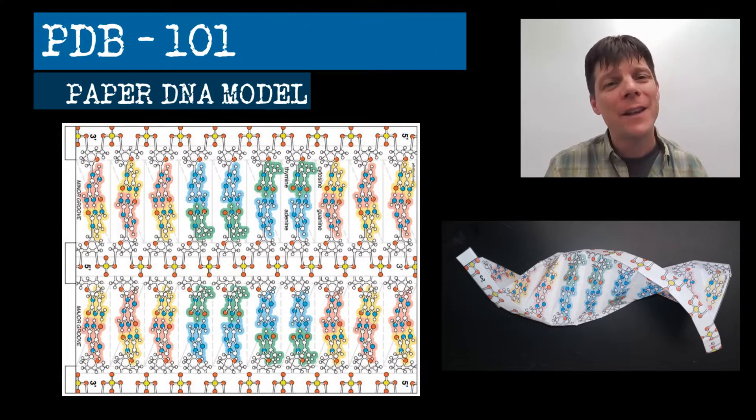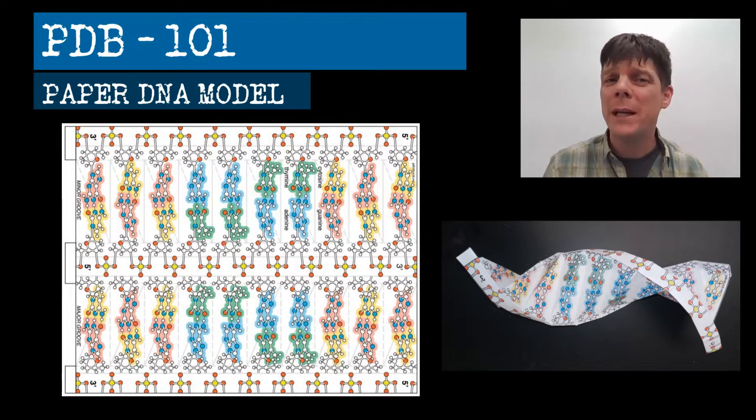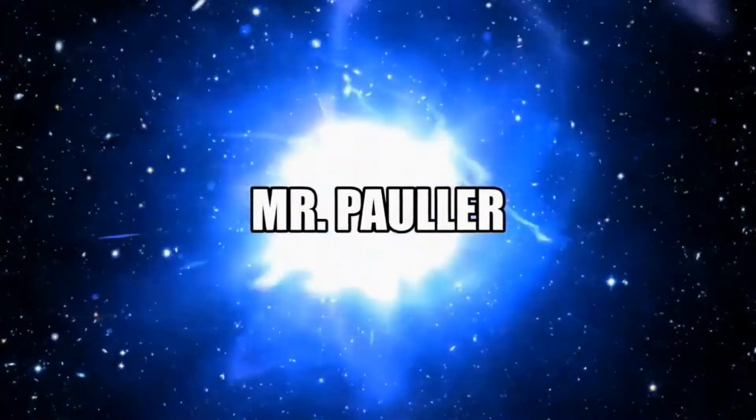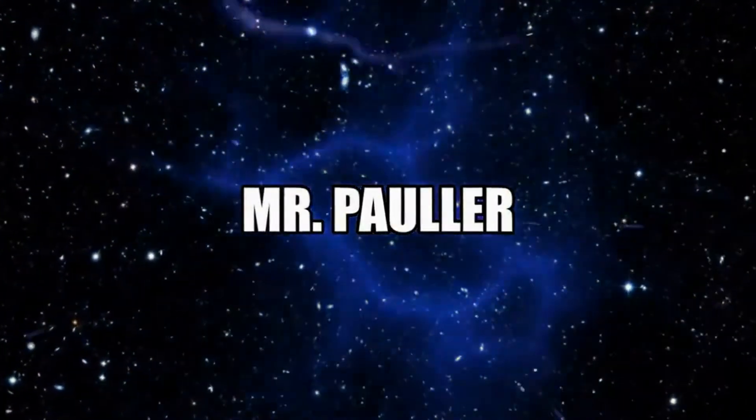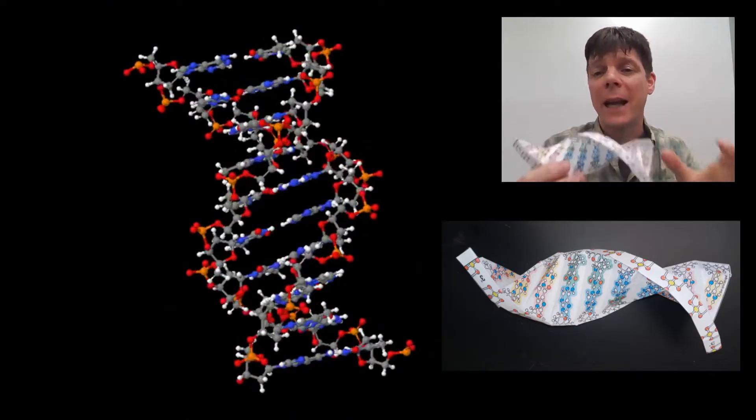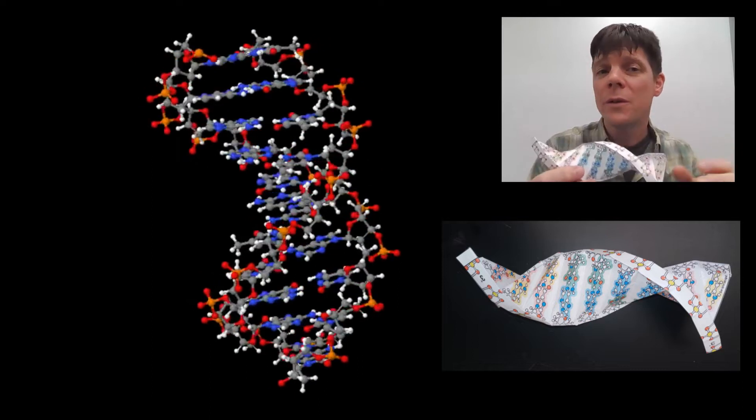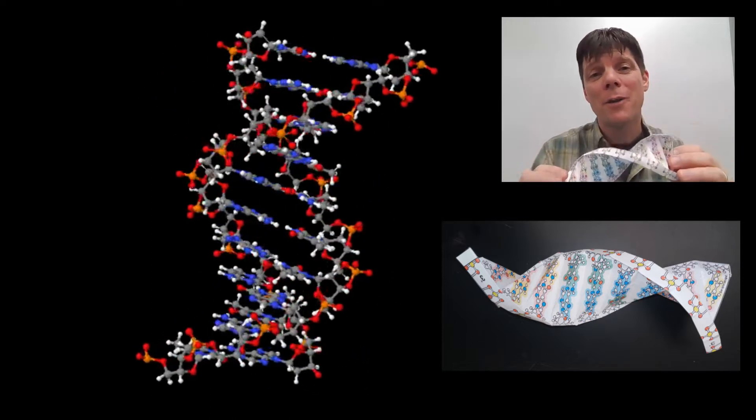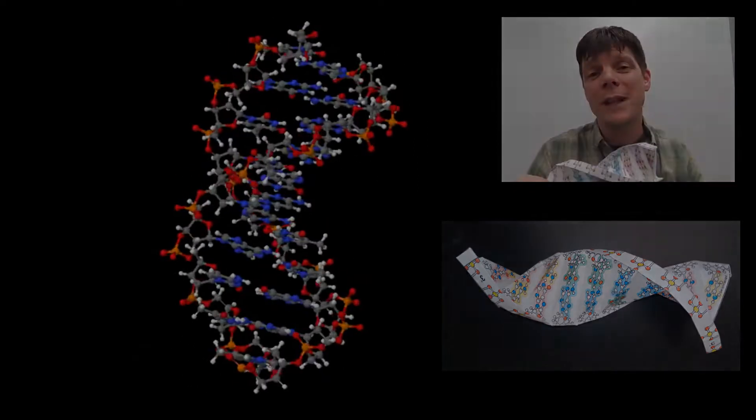Hi everybody, I'm Mr. Pauler, and in this video I'm going to show you how to fold the PDB-101 paper model of DNA. This is a really cool model that shows structural features of DNA that AP Biology students or students in a first-year college course need to be familiar with. Let's go ahead and fold the model first and then review the structural features of DNA.